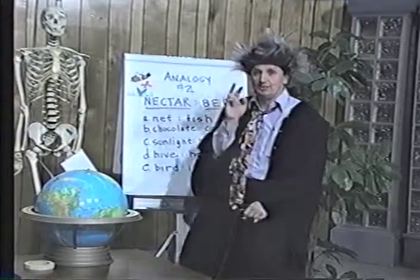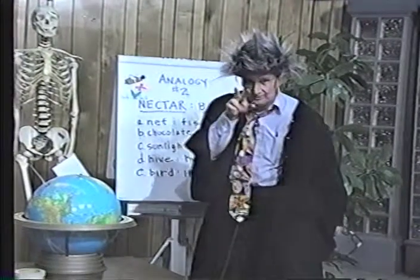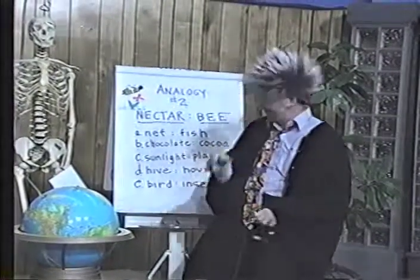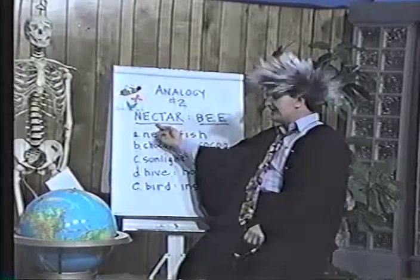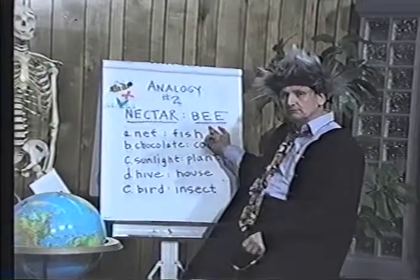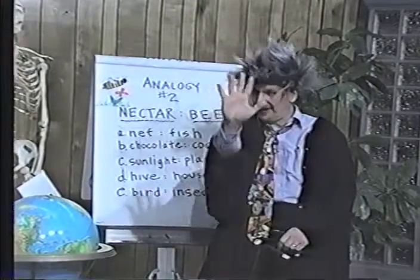Look at the relationships. Analogies are relationships that exist between words. Nectar, bee. Now look at five choices — five.